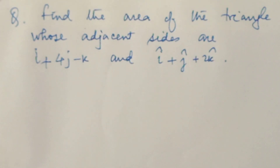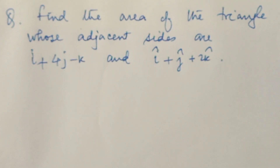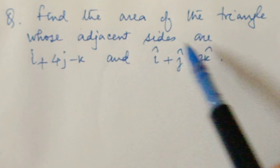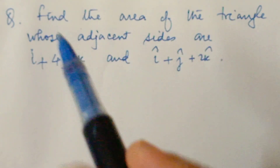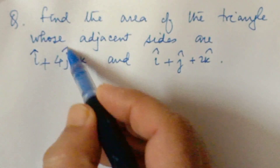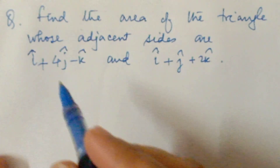Welcome to Vector Physics. In this video we will solve one question from vectors class 12 about the area of a triangle when adjacent sides are given. The question is from the specimen paper 2023. Find the area of the triangle whose adjacent sides are i plus 4j minus k and i plus j plus 2k.